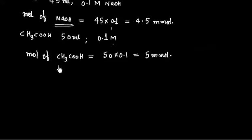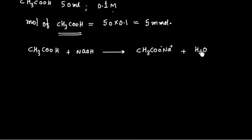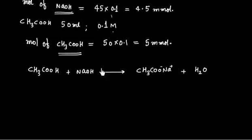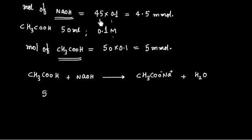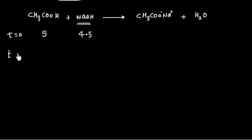Now we will have acid-base reaction. This is a base, this is acid. We will have CH3COONa plus H2O. Mole of acid is 5 mmol, mole of base is 4.5 mmol. NaOH is limiting. So at t equals zero, when this reaction will end, at t equals T, that is 0.5 millimole of acetic acid will remain, and this will have zero millimole of NaOH, and will have salt that is 4.5 millimole.